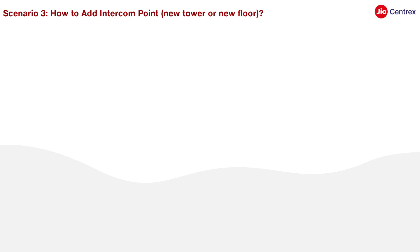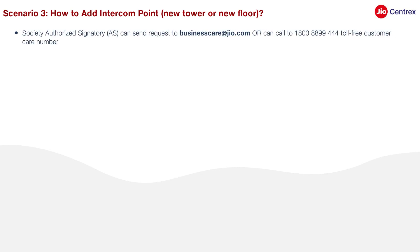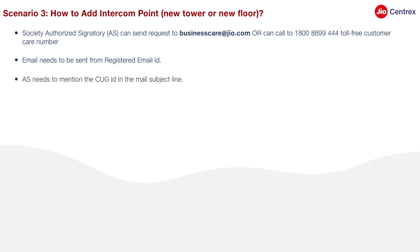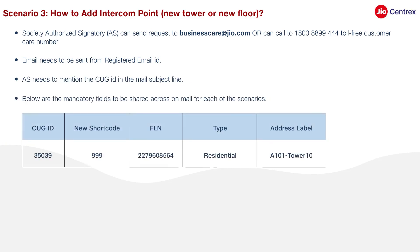Scenario 3: How to add an Intercom Point, New Tower, or New Floor. The Society Authorized Signatory can send a request to BusinessCare@geo.com or call the toll-free customer care number 1-800-8899-444. The email needs to be sent from the Registered Email ID. The Authorized Signatory must mention the CUG ID in the mail subject line. The mandatory fields for each scenario should be shared in the mail.